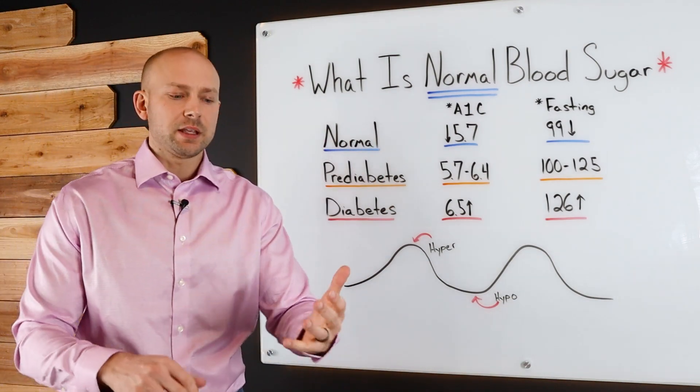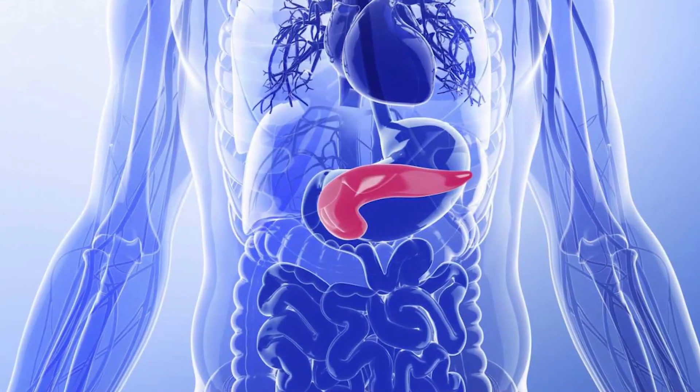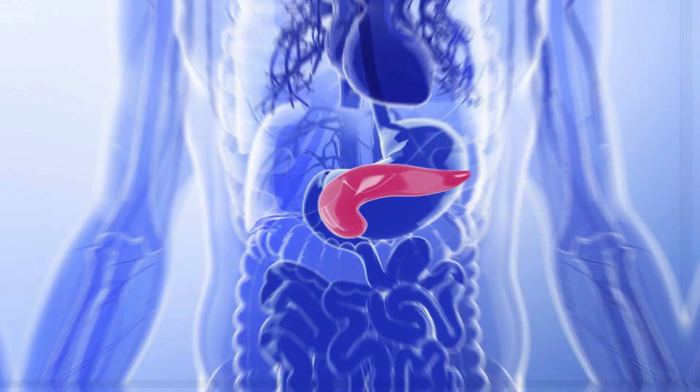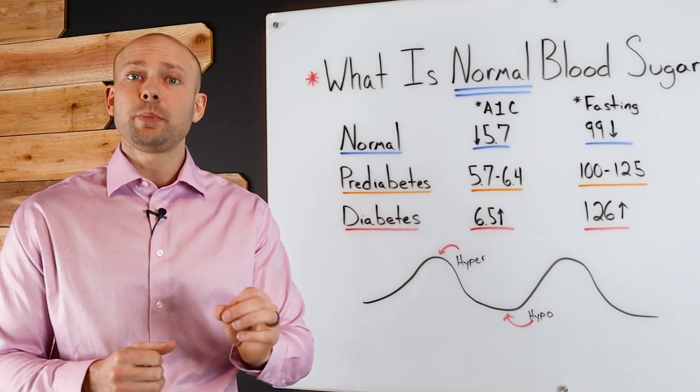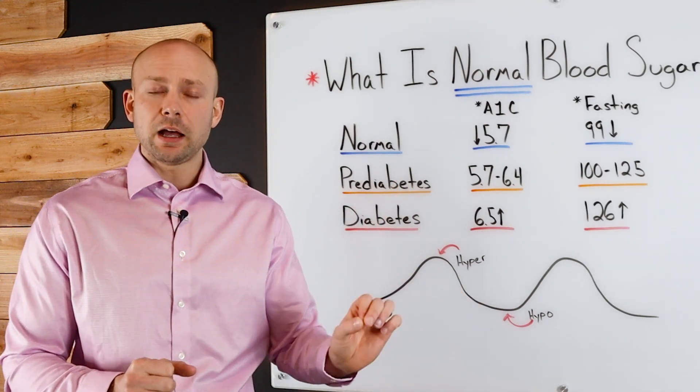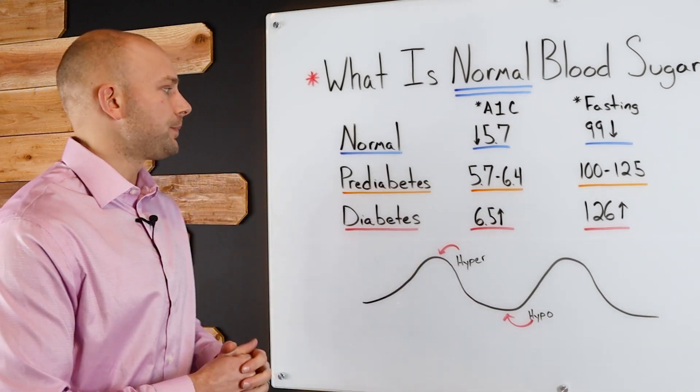This is what normal is. That means that the insulin from the pancreas is balanced. The pancreas is producing insulin effectively, efficiently. It also means that insulin is shuttling blood sugar into the cell effectively and efficiently.